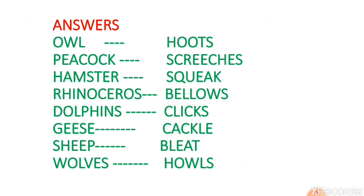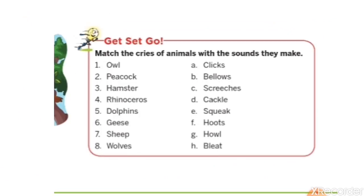Peacock makes the sound called screeches. Hamster, which is a kind of mouse, makes a squeak sound. Rhinoceros makes a sound called bellows. Dolphins — clicks. Geese — cackle. Sheep — bleat. Wolves — howl. So these are the answers for the match the following.